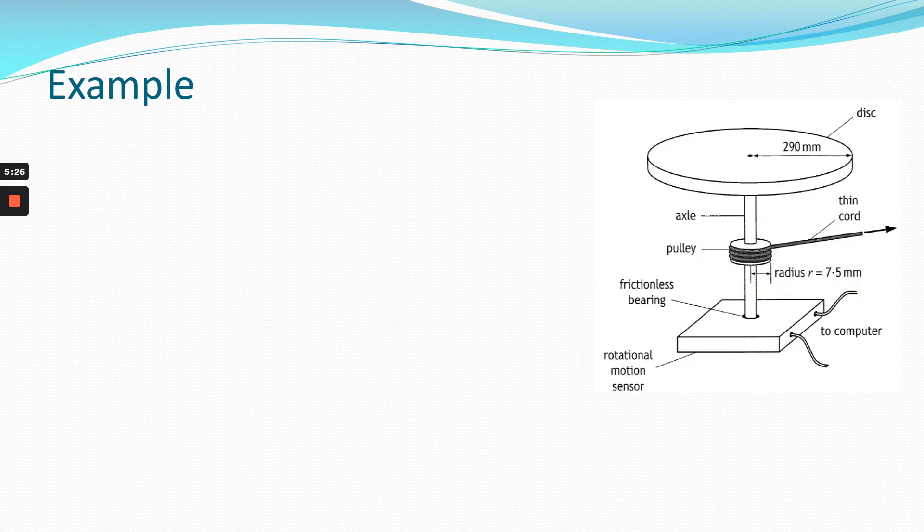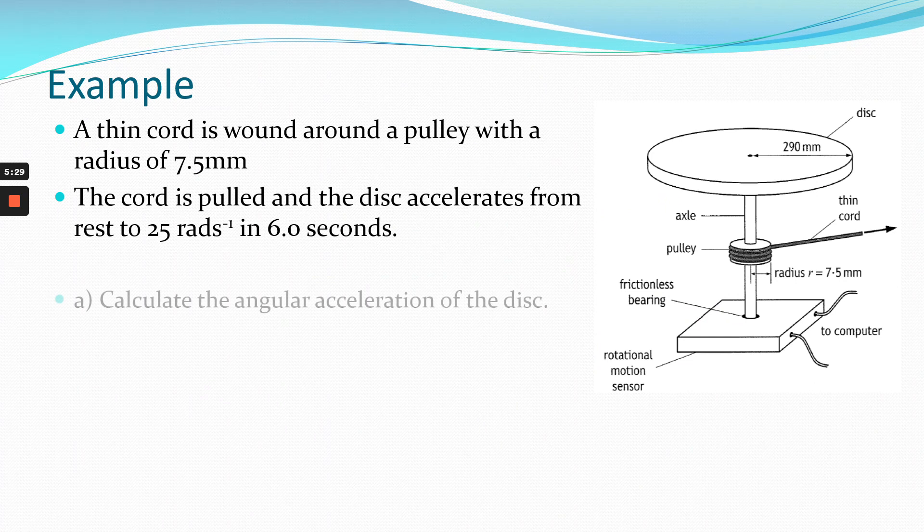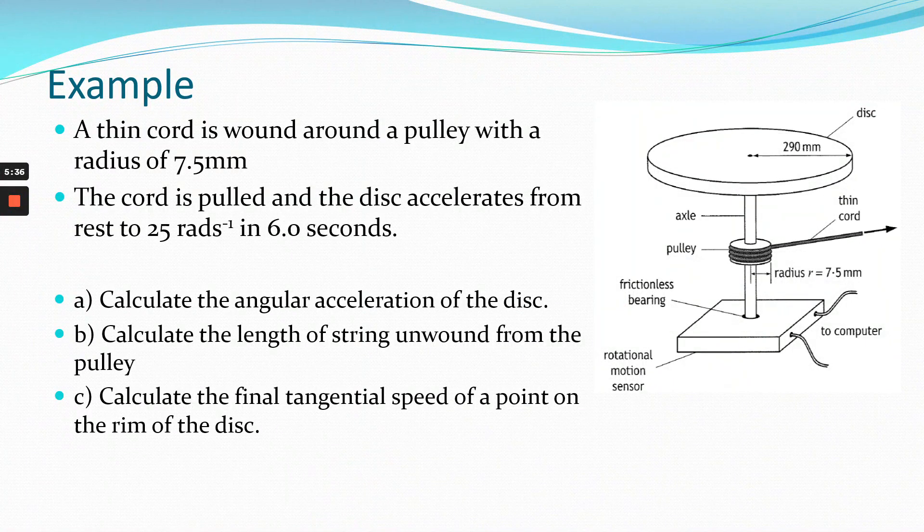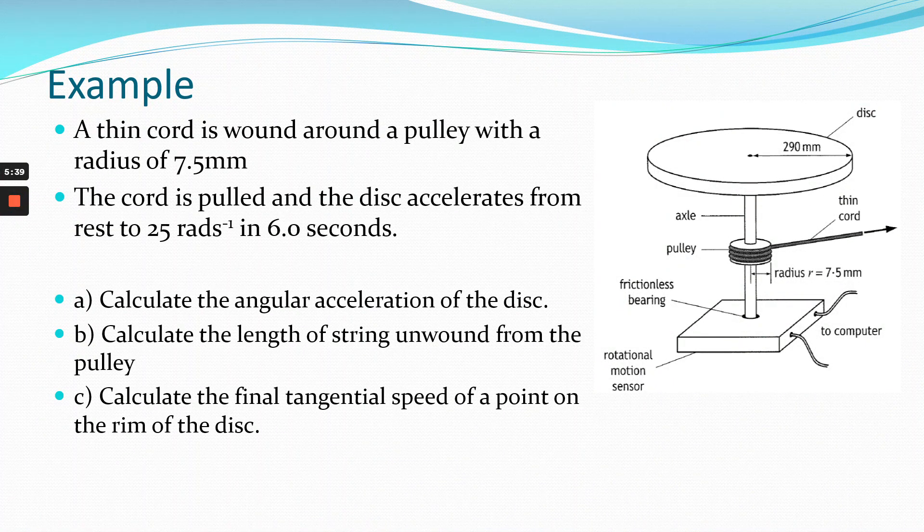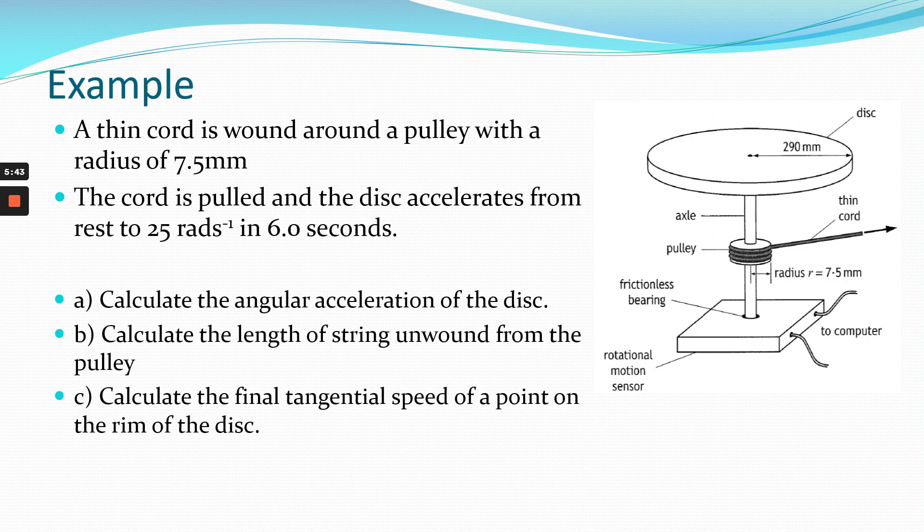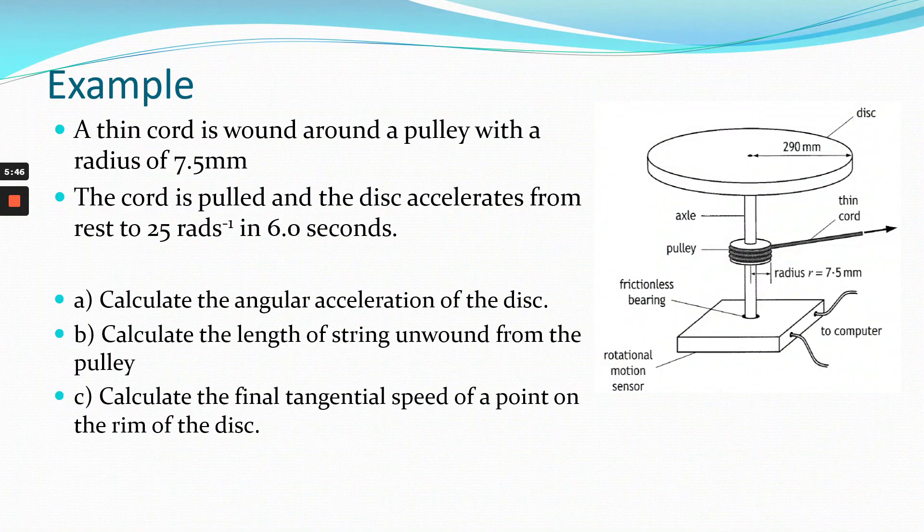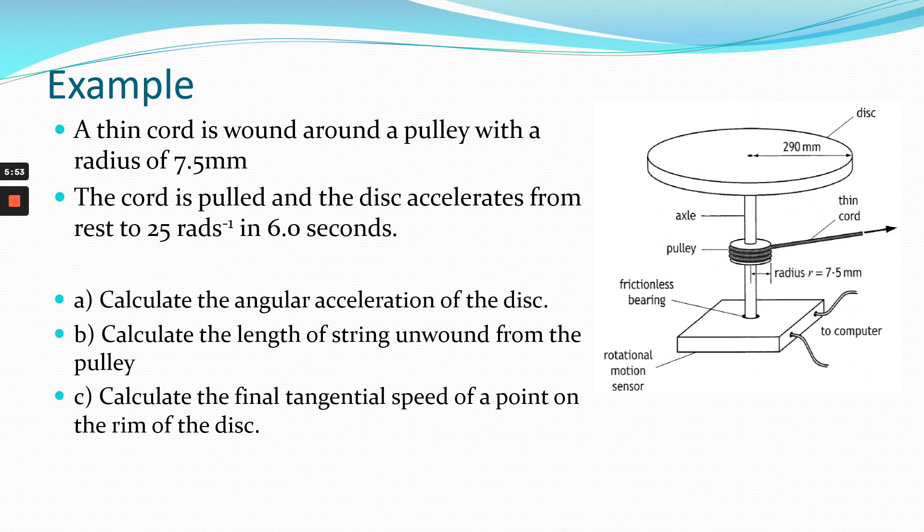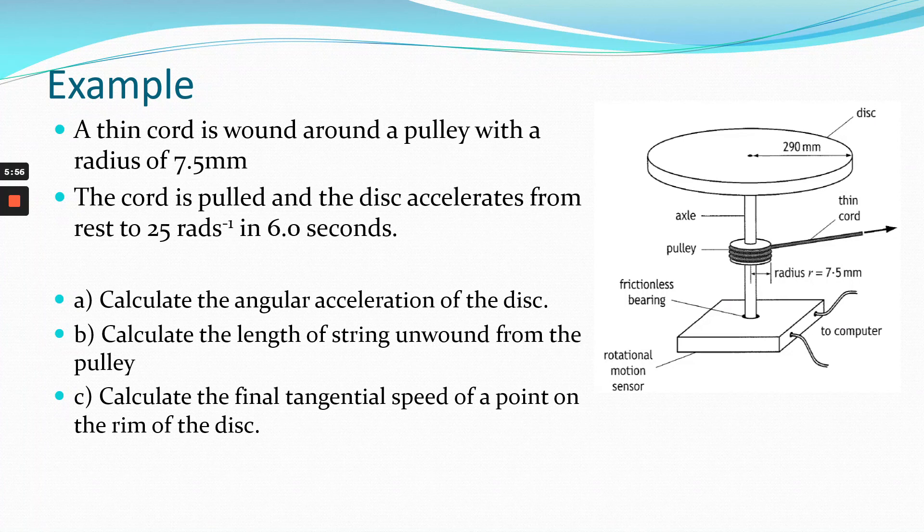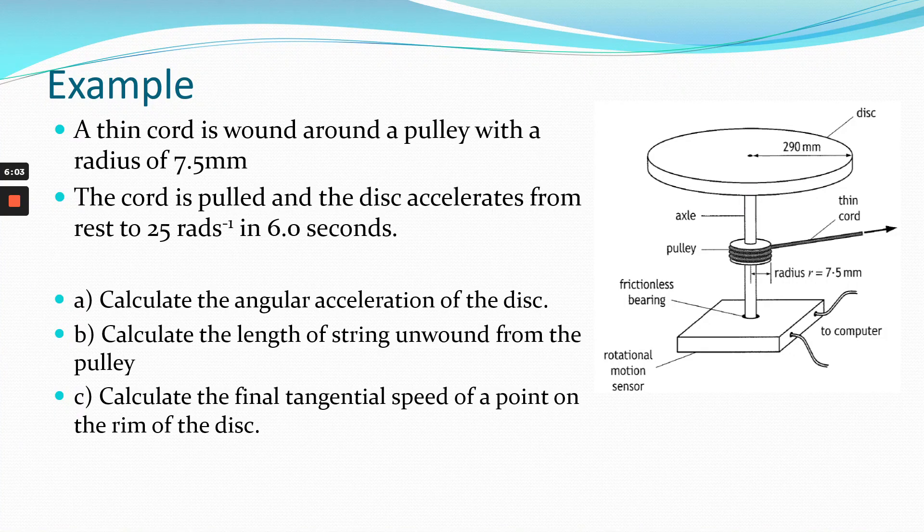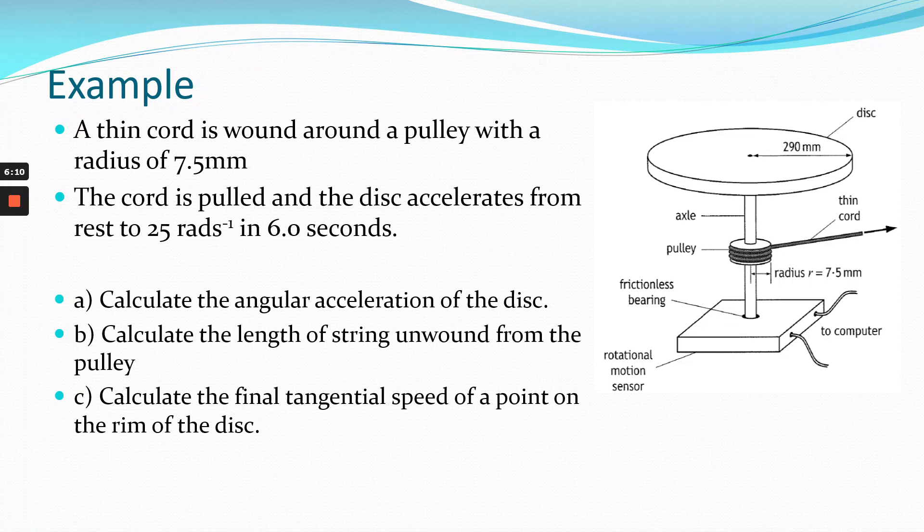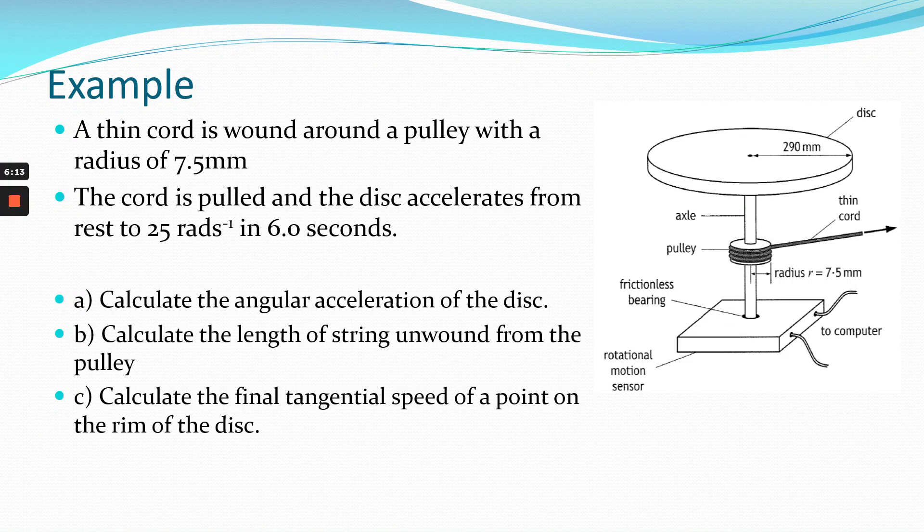We started off this unit by saying basically you've done it all already, and it's true - you absolutely have. That theme is actually going to continue because we're not done with circular motion yet. You might not be surprised to hear we're going to look at dynamics after this. So we'll tie this together with an example. We've got a disc, and the disc is mounted on an axle. Around the axle we've got a little pulley wheel and we've got some string wrapped around it. Essentially somebody pulls the string which causes the pulley wheel to rotate, which causes the disc to rotate because the pulley wheel and the disc are attached so they have to have the same angular velocity at all times. They're using a computer to measure the angular velocity of the disc.